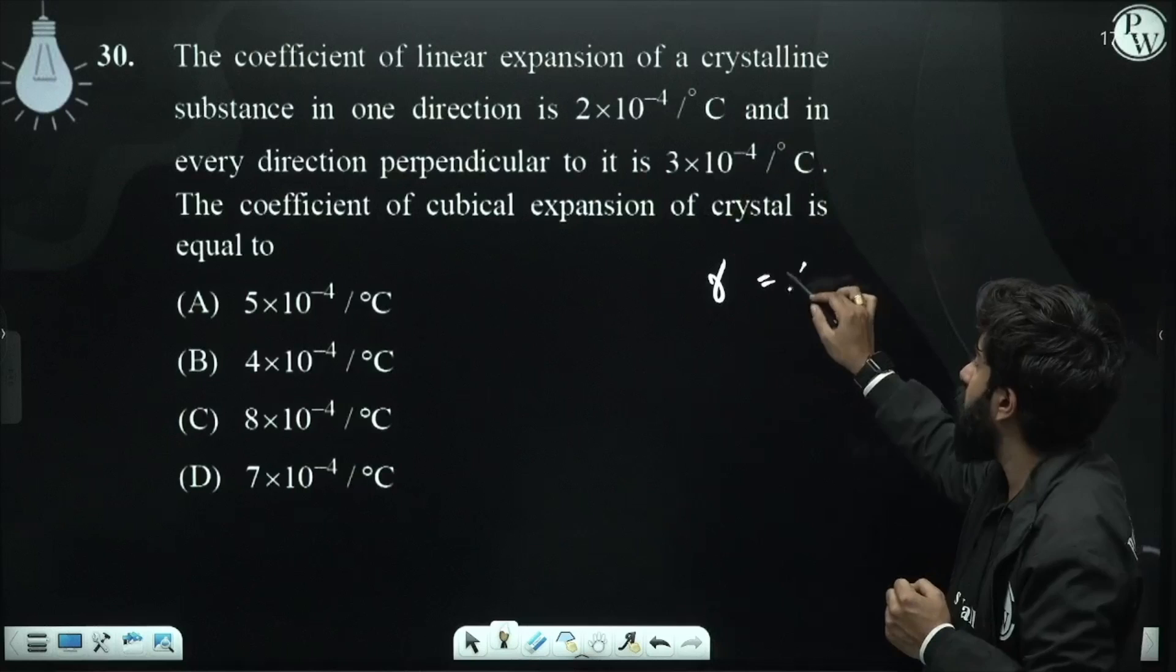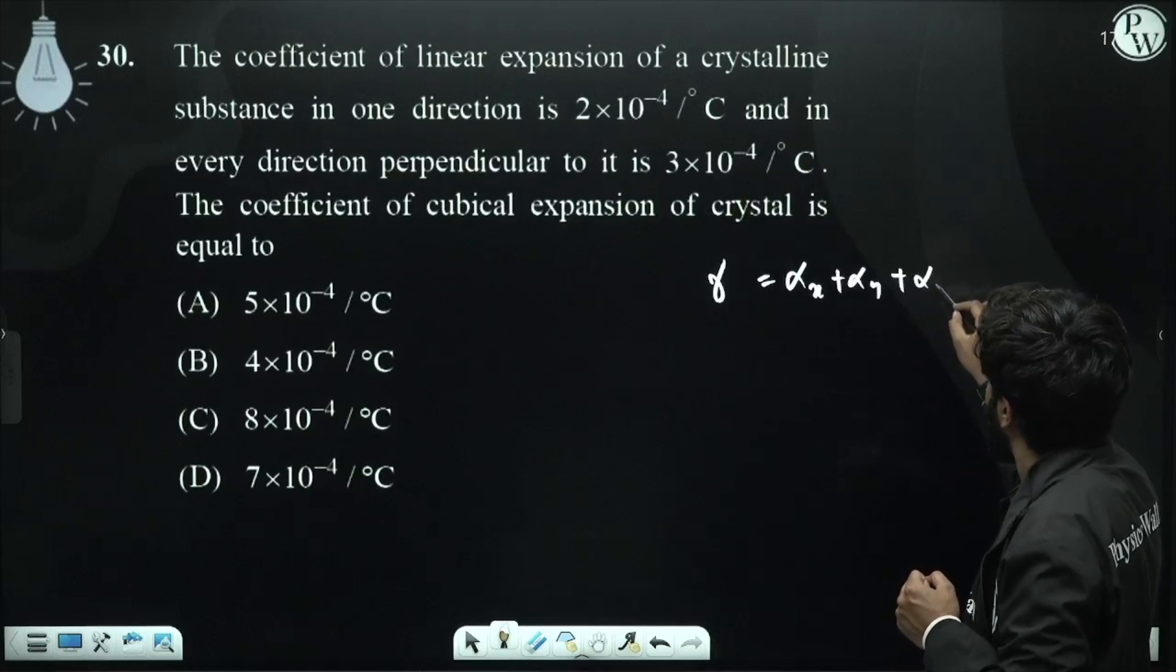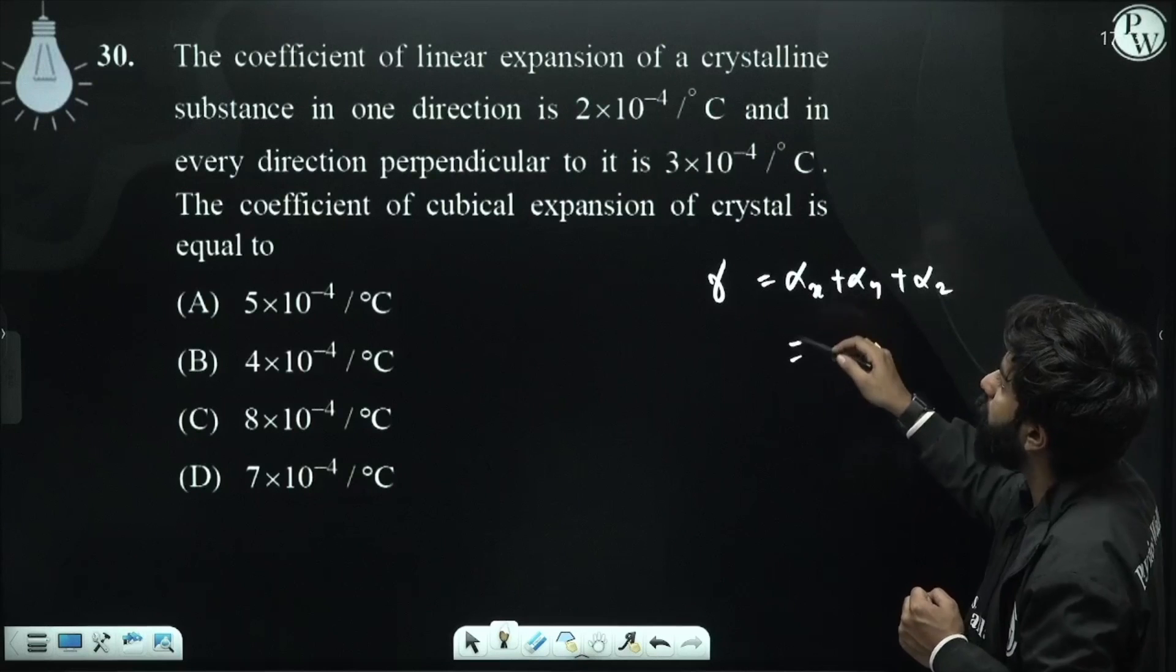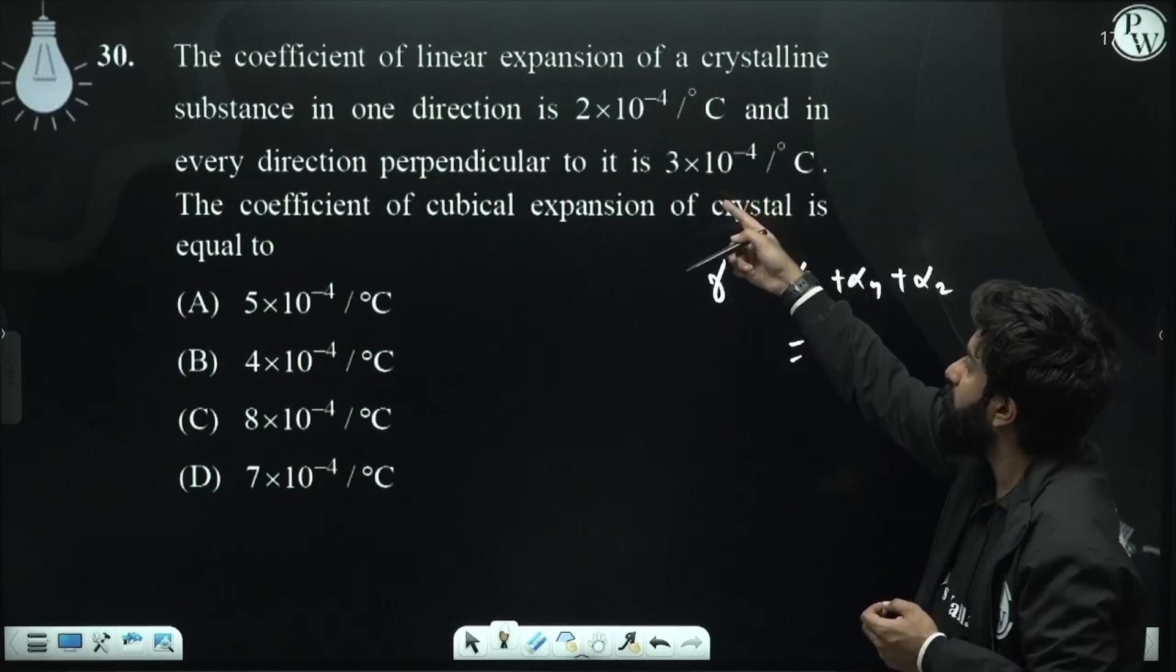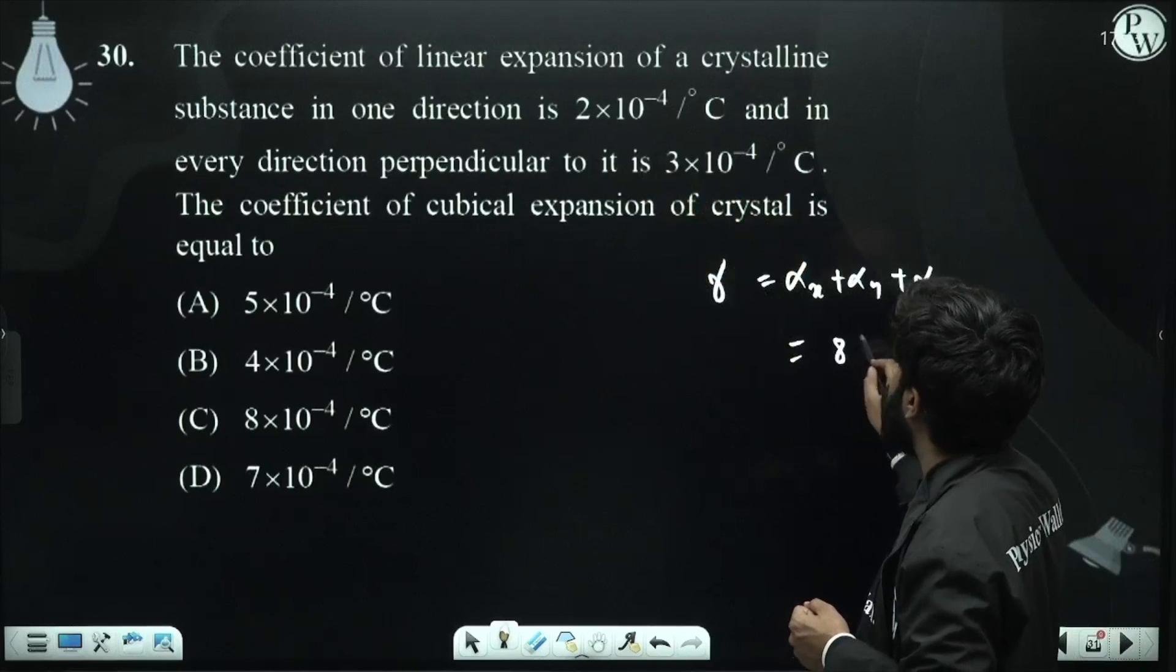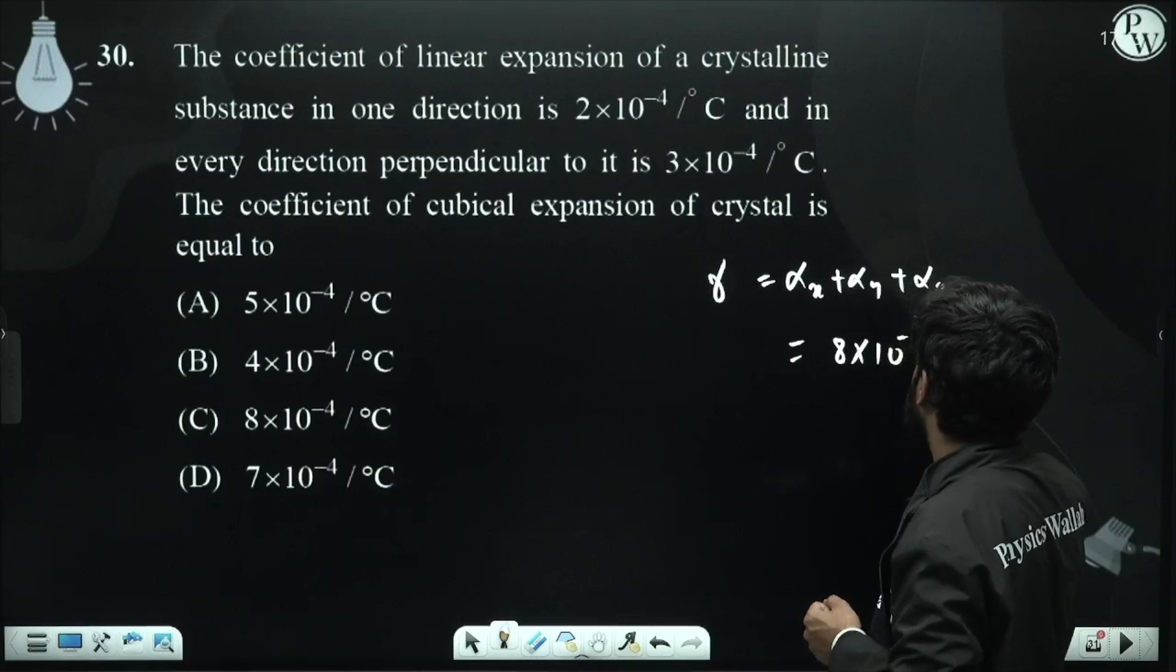This means alpha_x plus alpha_y plus alpha_z. How much will it be? 2 and 6. We will do it twice. How much will it be? 8 into 10 to the power minus 4 per degree.